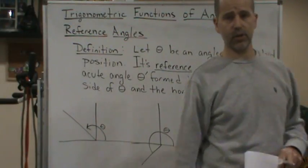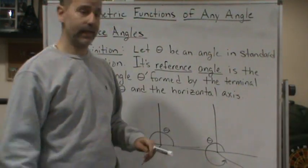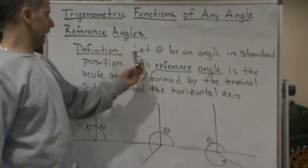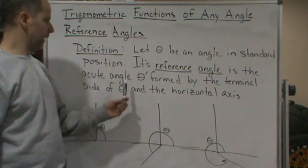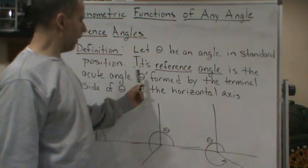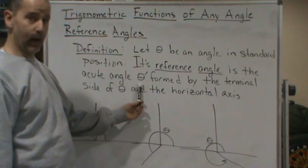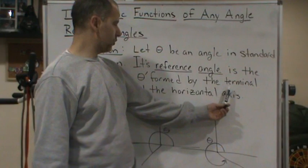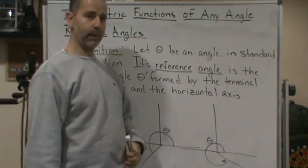Now we're going to start talking about reference angles with the definition. The definition of a reference angle is: let θ be an angle in standard position. Its reference angle is the acute angle θ' formed by the terminal side of θ and the horizontal axis.